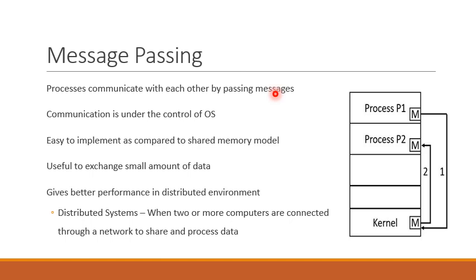The processors who wish to communicate with each other will exchange messages with each other. As this figure shows, process P1 wants to send a message to process P2. It wants to exchange this message, so process P1 will send this message to the operating system — to the kernel. The kernel will receive this message from P1 and forward it to the desired process, P2. Communication is under the control of the operating system; the kernel is involved in this communication in the message passing scheme.